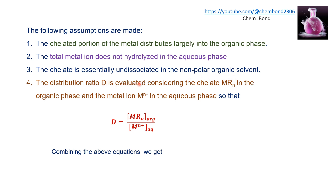The distribution ratio D is evaluated by considering the chelate MRₙ in the organic phase. The distribution ratio formula equals the concentration of a species in the organic phase divided by its concentration in the aqueous phase. The two major species considered are the metal ion in the aqueous phase and the chelate in the organic phase, so D is written as [MRₙ]_org divided by [Mⁿ⁺]_aq.